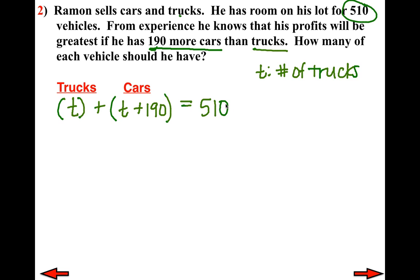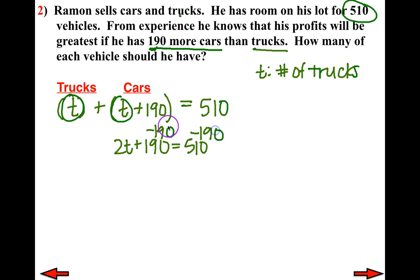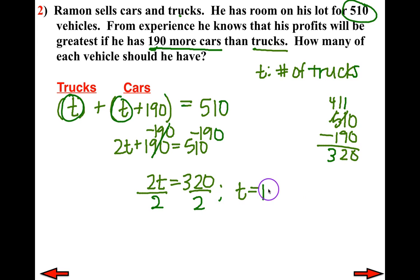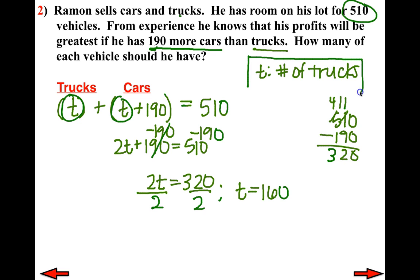Since I'm only dealing with one variable, I can solve for T. Combining T and T: 2T + 190 = 510. Get rid of the constant — 2T = 320. Simply divide both sides by the coefficient: T = 160. T represents the number of trucks, so there are 160 trucks.